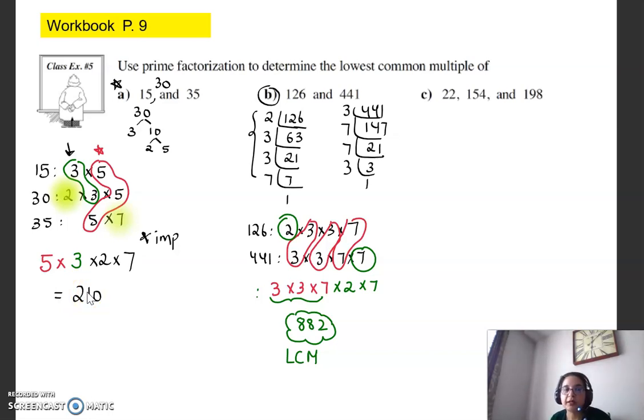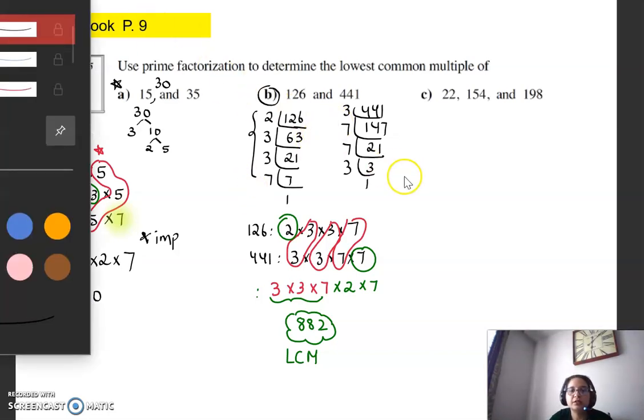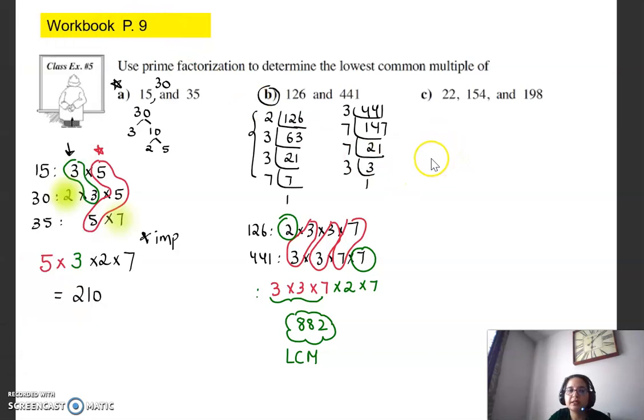So again, if at this point now you want to pause the video and try part C, you're more than welcome to do that, or you can continue to see what I'm doing. The same idea. I'm not going to do the prime factorization. I'm just going to write down the factors. So 154 will become 2 times 7 times 11, and then 198 is 2 times 3 times 3 times 11.